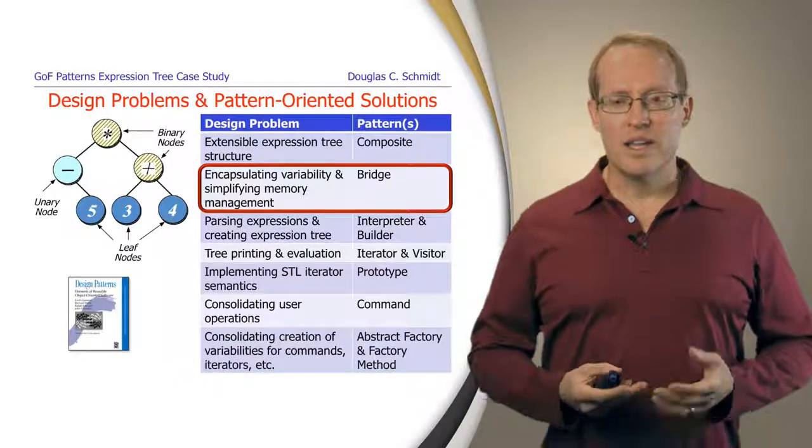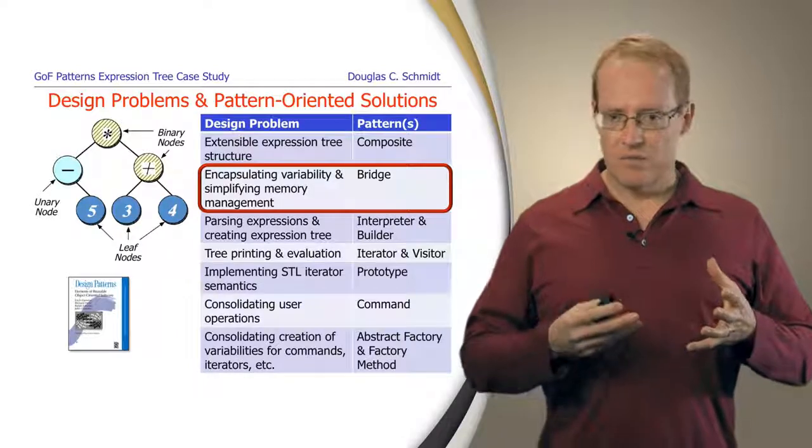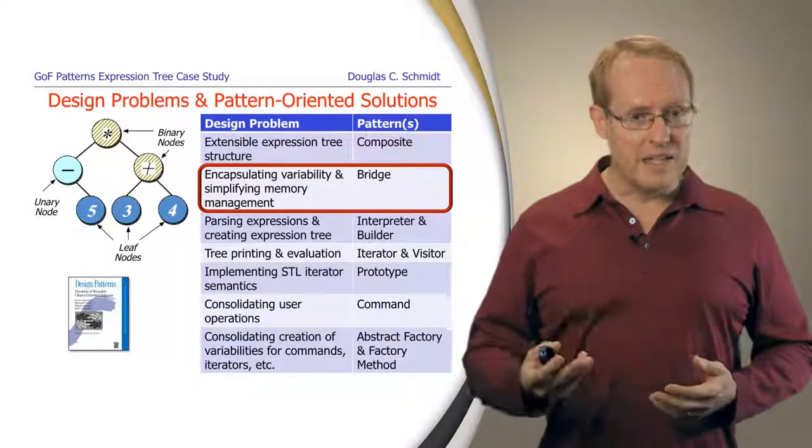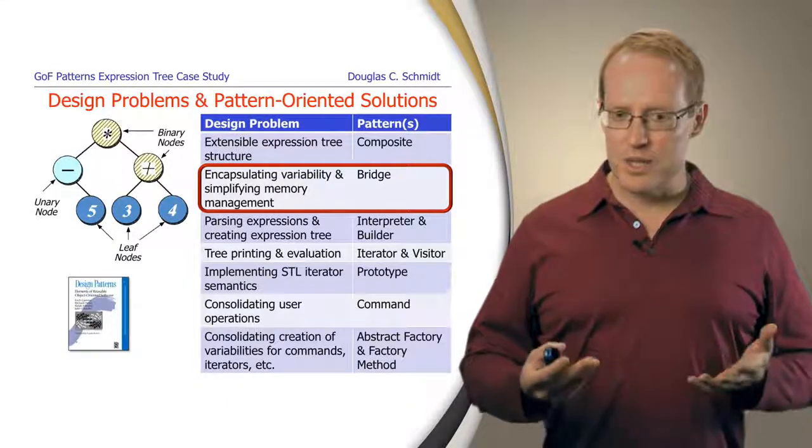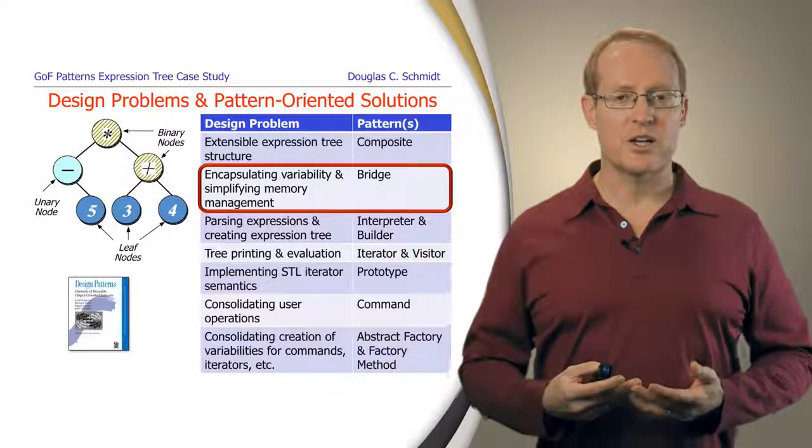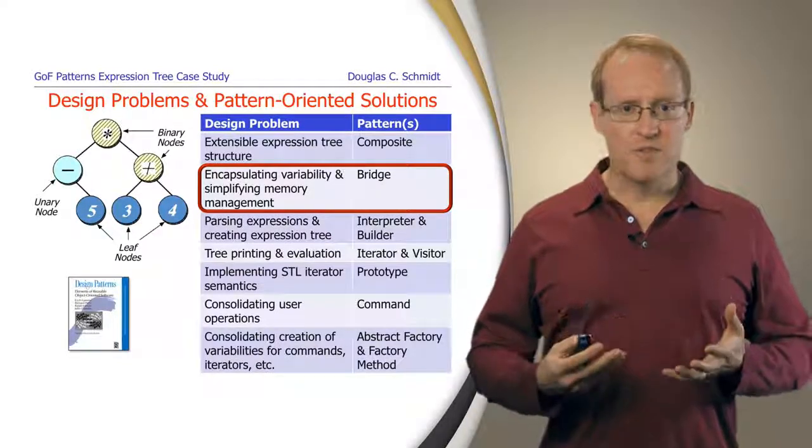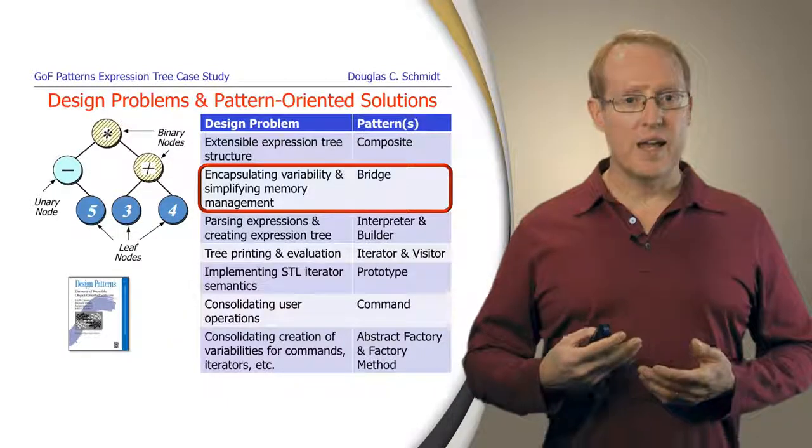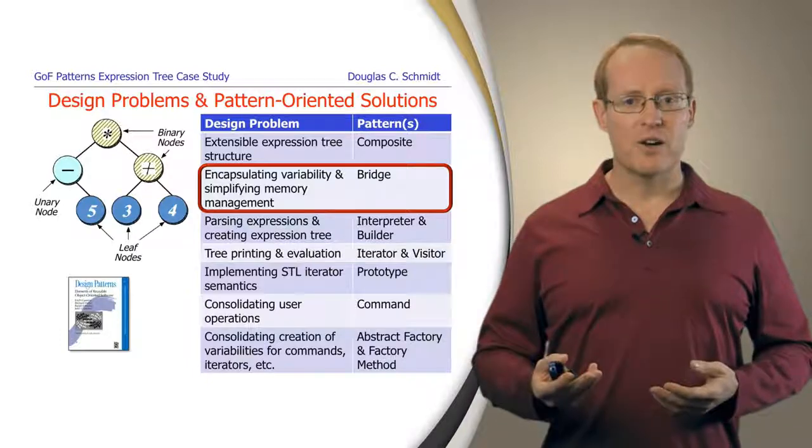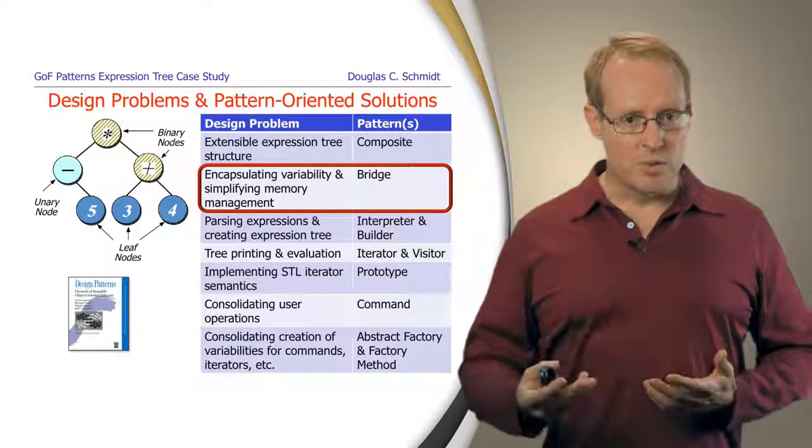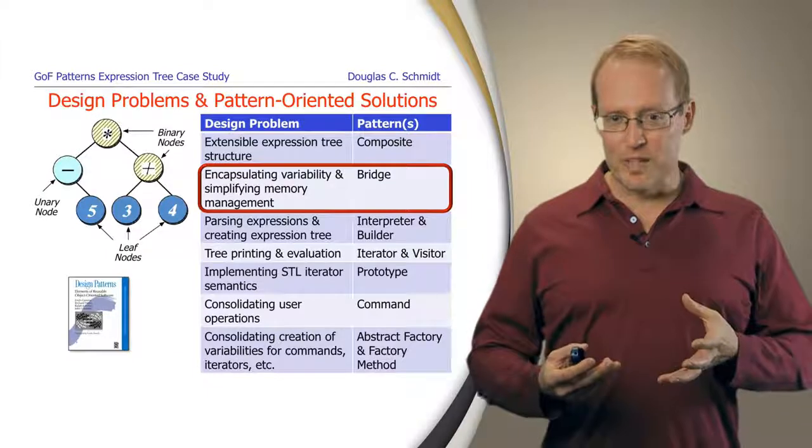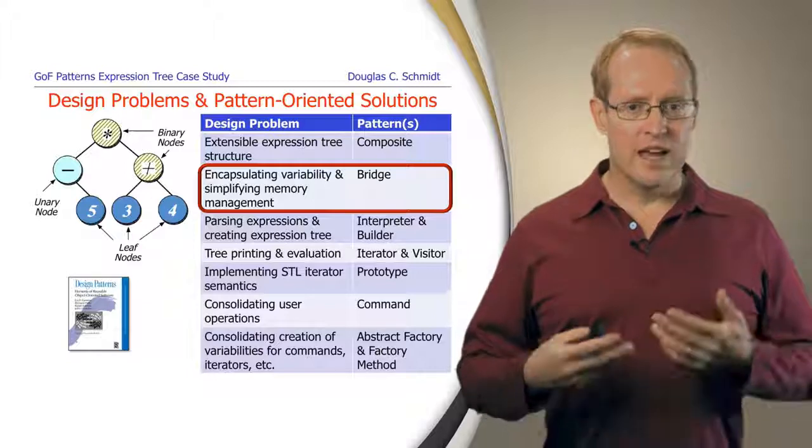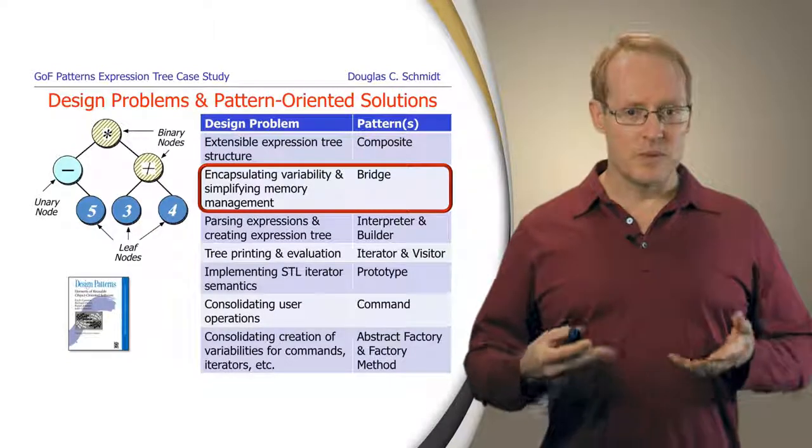Another problem we have to deal with is how we're going to encapsulate variability, hide some of the different ways of expressing different parts of our solution. And in cases where we implement with languages like C++ that don't have automatic garbage collection, we'd like to find a way to automatically simplify memory management. In order to do these kinds of things, we're going to apply another Gang of Four pattern called the bridge pattern, which is used to separate interface from implementation and can also be used to cleverly reference count our expression tree so they can be passed around more readily via things like value-based STL algorithms and containers.